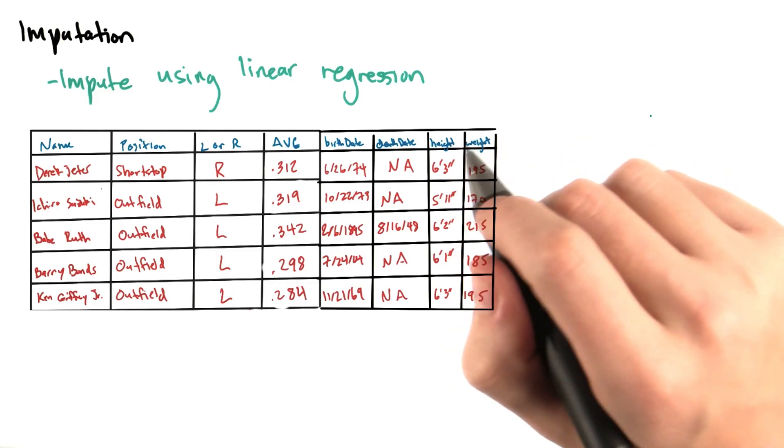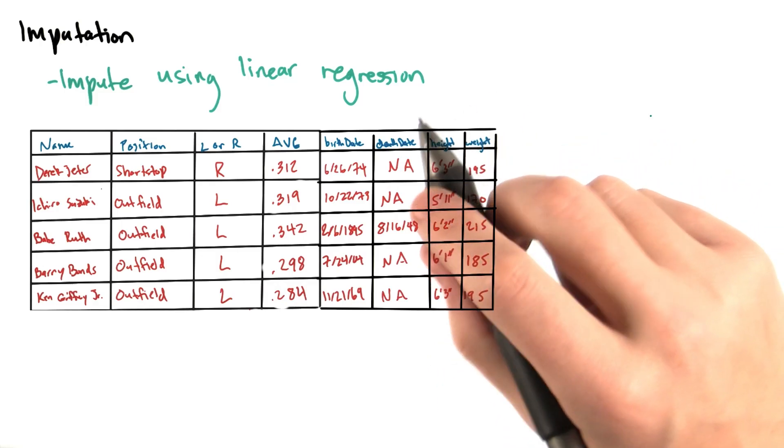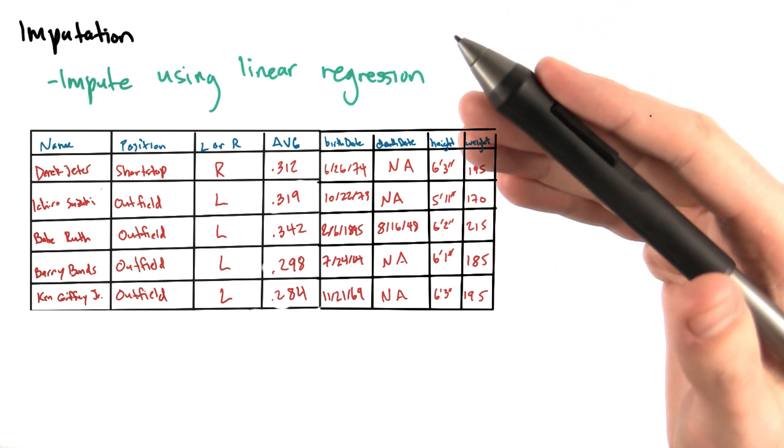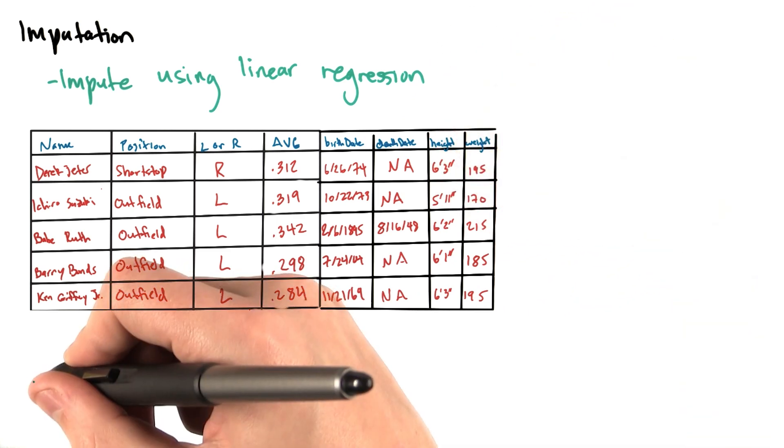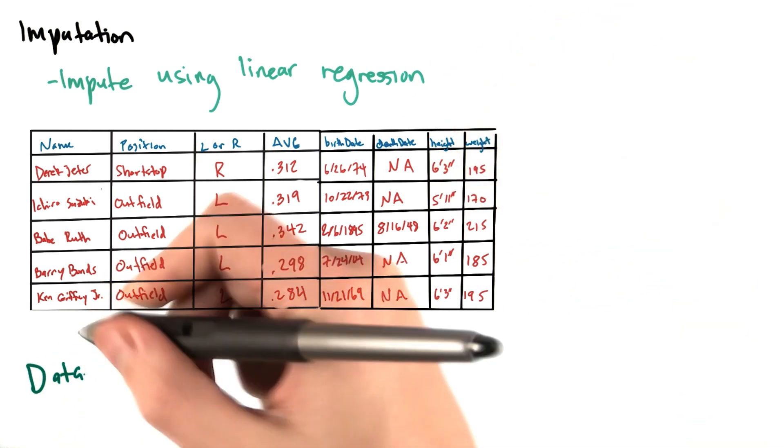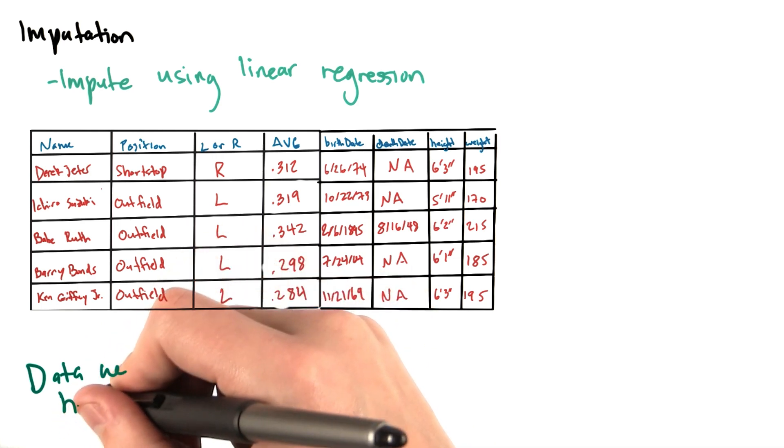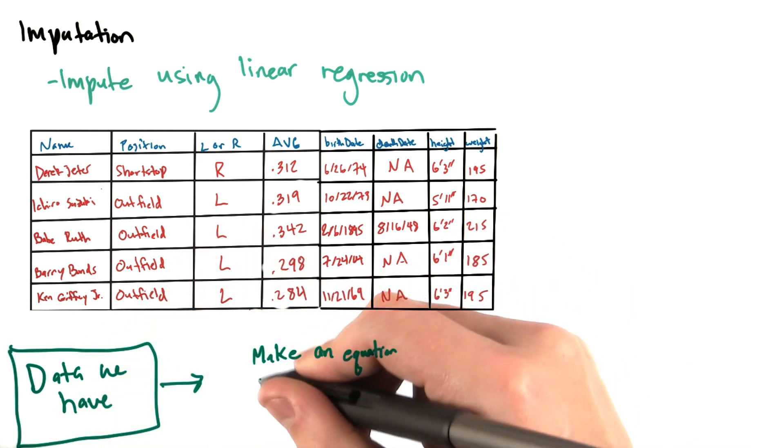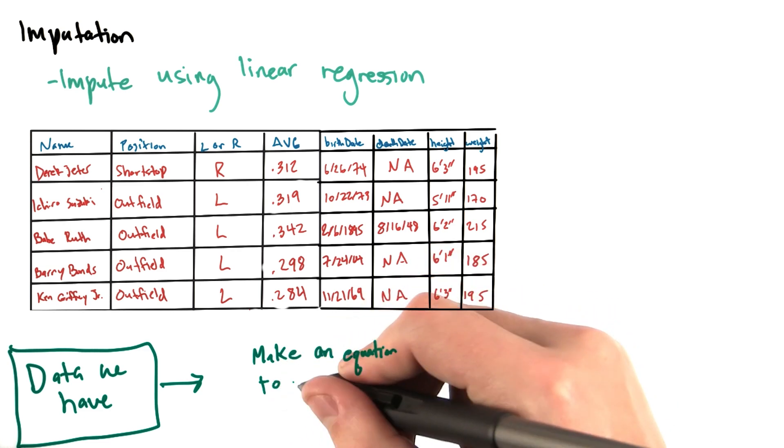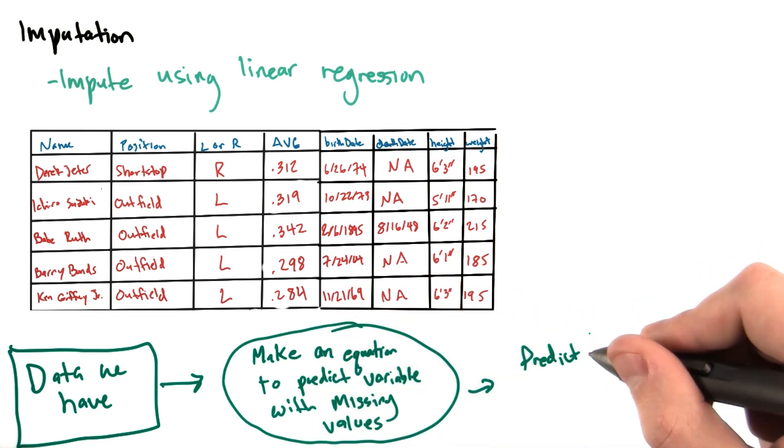Another method that we could use to impute missing values in a dataset is to perform linear regression to estimate the missing values. We'll cover linear regression in more depth in the next lesson, but the general idea is that we would create an equation that predicts missing values using information we do have, and then use that equation to fill in our missing values.